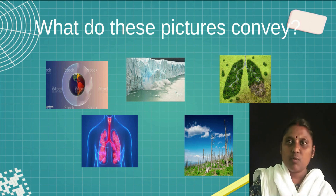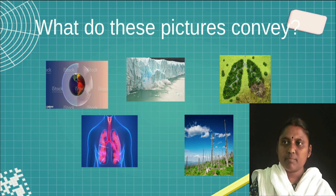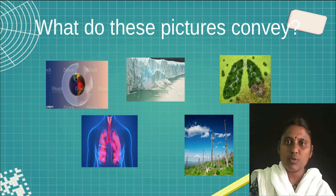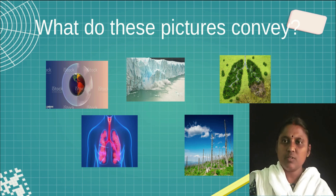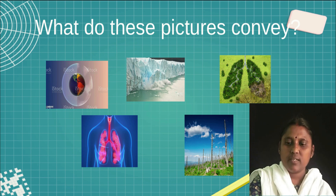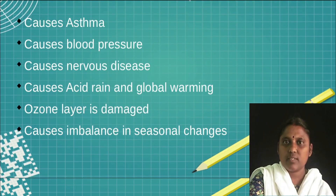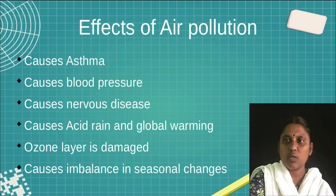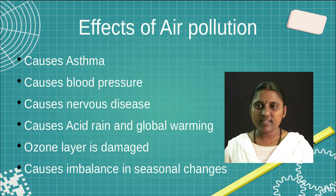Next, I ask what the pictures convey. Students look at pictures of lungs, trees, icebergs, and the ozone layer. From their ideas, we form sentences on the effects of air pollution: air pollution causes asthma, blood pressure, nervous disease, acid rain, global warming, damage to the ozone layer, and imbalance in seasonal changes.